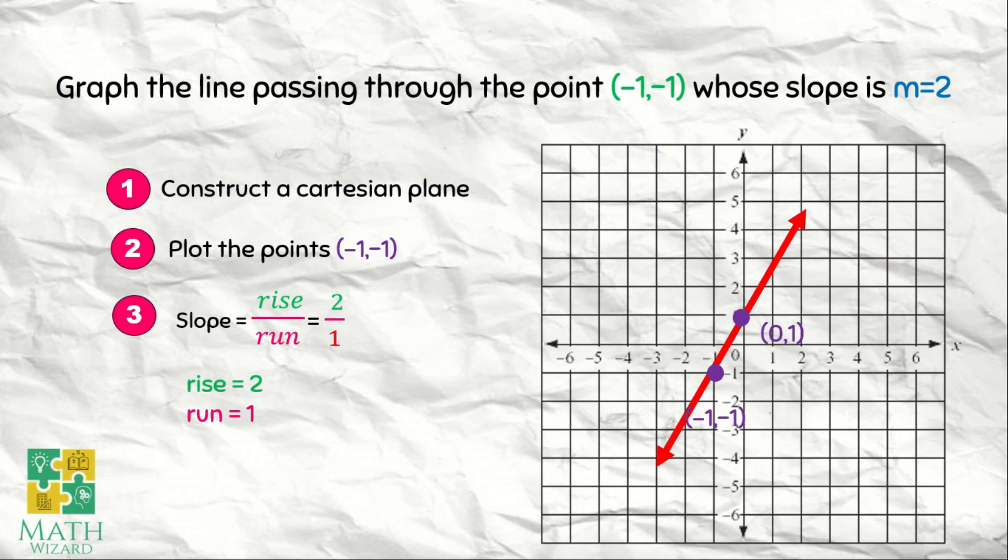So the graph of the line passing through the point (-1, -1) with the slope of positive 2 is this one.